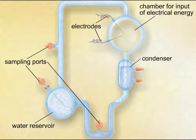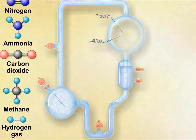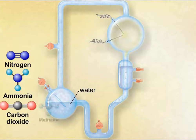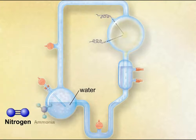They added a condenser to convert the water vapor back to a liquid. The researchers then added water, hydrogen gas, methane, carbon dioxide, ammonia, and nitrogen.